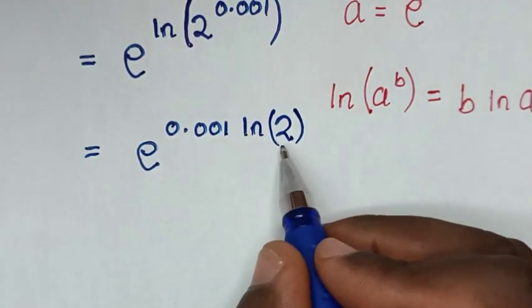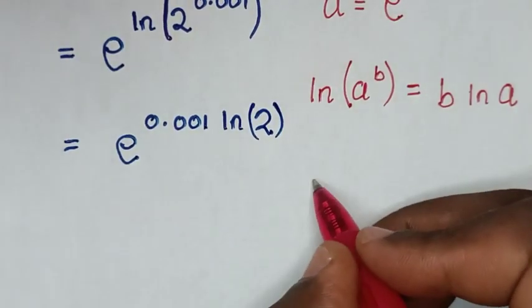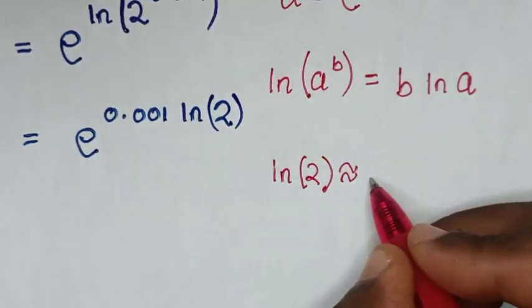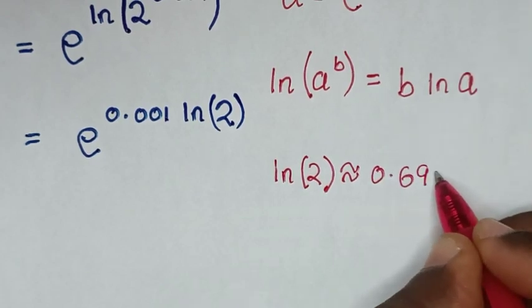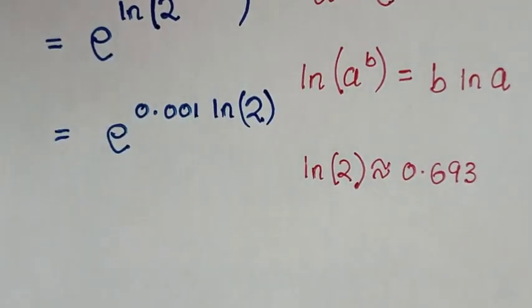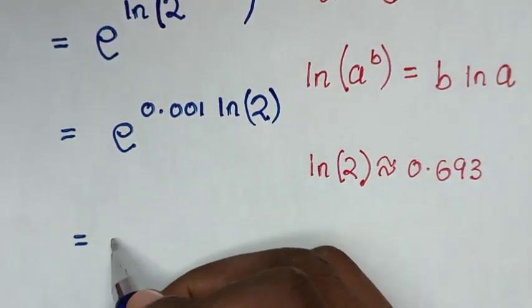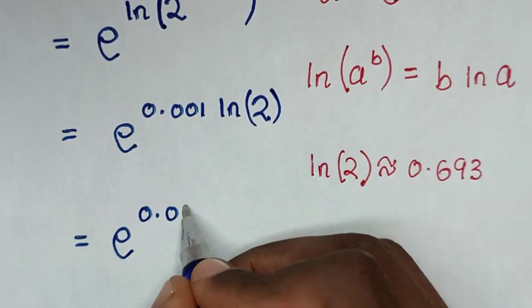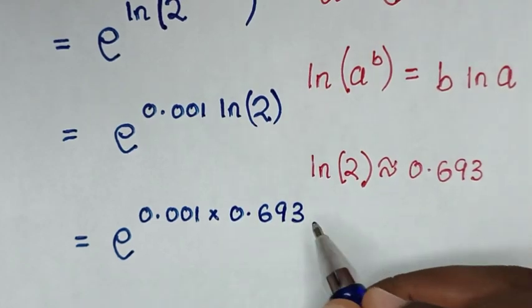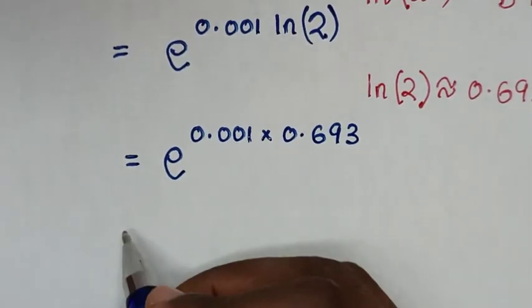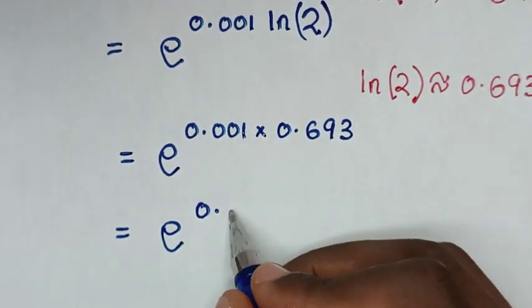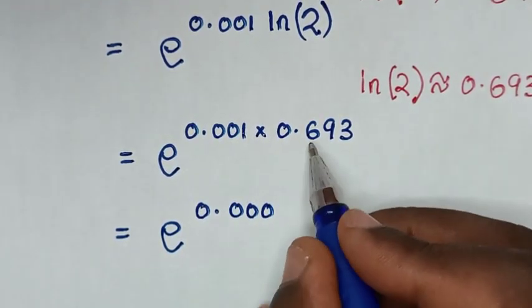We should memorize that ln 2 is approximately equal to 0.693. We substitute 0.693 in here. It will be equal to e to the power of 0.001 times 0.693. In the next step, it will be equal to e to the power of 0.000693.